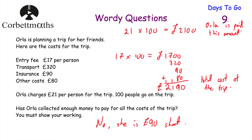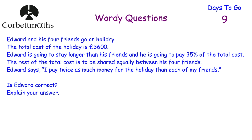Let's look at our next question. Edward and his four friends go on holiday. The total cost of the holiday is £3,600. Edward's going to stay longer than his friends, so he decides he's going to pay 35% of the total cost. The rest of the cost is shared equally between his four friends. Edward says: 'I pay twice as much money for the holiday as each of my friends.' Is Edward correct? Explain your answer. This is a calculator question — press pause and try it now.